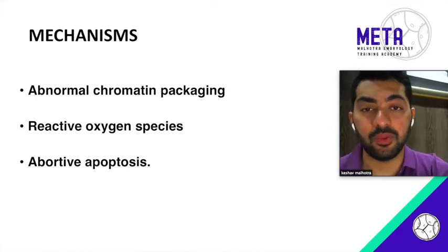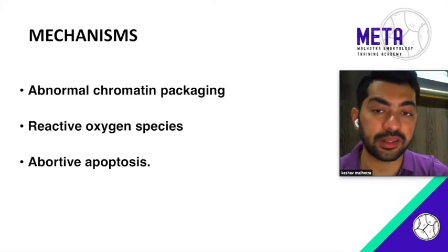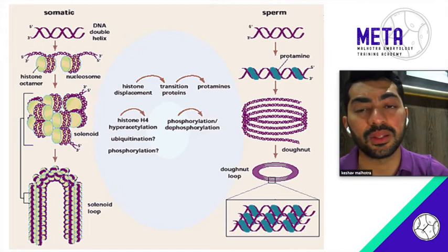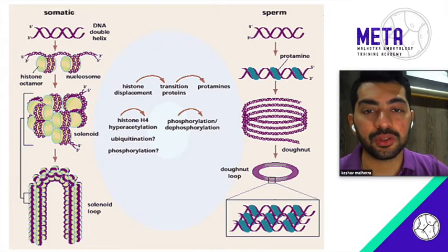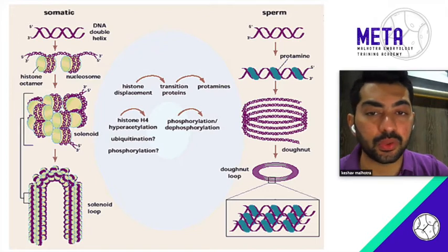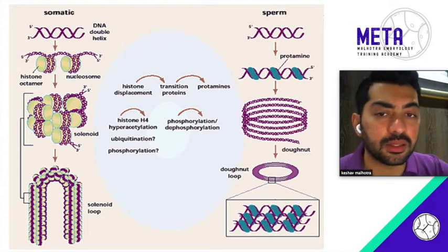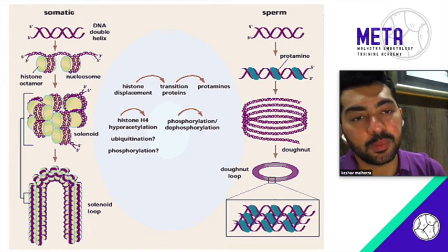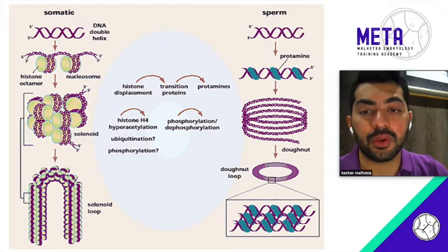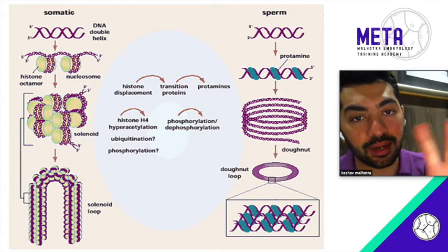The three mechanisms by which sperm DNA damage occurs are: abnormal chromatin packing, reactive oxygen species, and abortive apoptosis. During spermatogenesis, compaction of the sperm DNA occurs through ubiquitinization or phosphorylation, where histone proteins are converted into protamines, which are coil-like structures. If this process is compromised, the DNA within the sperm starts leaking out, and all of the earlier factors can affect spermatogenesis and this process as well.